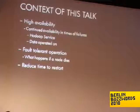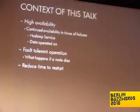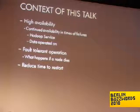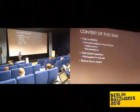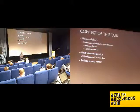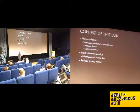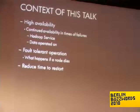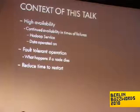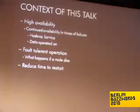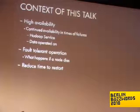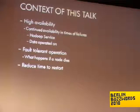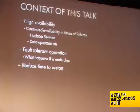High availability goes hand-in-hand with fault tolerance: if something happens, you still want the whole thing to continue operating. There are two bits one can separate in terms of Hadoop. First, the Hadoop service layer: can I still submit my MapReduce jobs, are they still being executed? Second, the persistence layer: will my data still survive if there's something going on — if a node dies, multiple nodes die, or if there's a power failure?